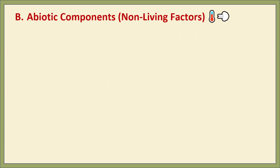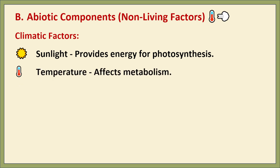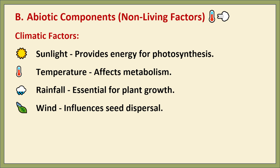The second classification is abiotic components. These are the physical and chemical elements that influence the survival of living organisms. Climate factors include sunlight, which provides energy for photosynthesis and regulates temperature; temperature, which affects the metabolic activities of organisms; rainfall, which is essential for plant growth and maintaining water bodies; and wind, which influences seed dispersal and pollination.